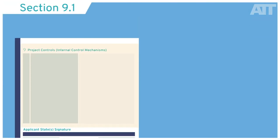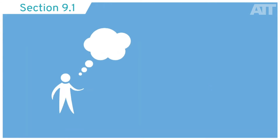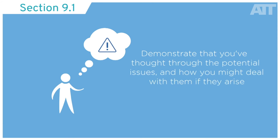In 9.1, you should identify and describe any risks or uncertainties that could impact the project. Applicants should not be shy about identifying potential risks. The selection committee simply wants to see that you have thought through the challenges the project could face and how you might deal with them if they arise.